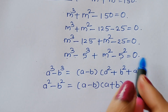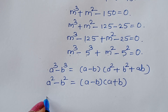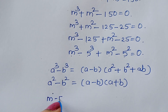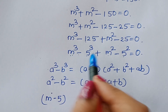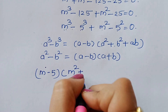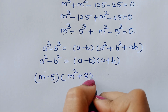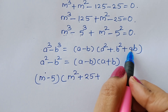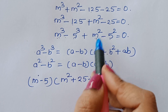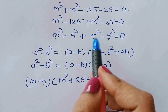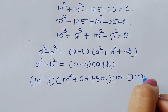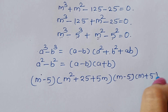Using both formulas, m cube minus 5 cube gives us m minus 5, times m square plus 25 plus 5m. And m square minus 5 square gives us m minus 5 times m plus 5, equal to 0.